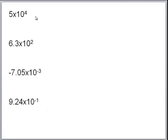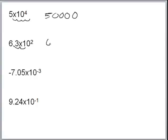Now let's practice taking numbers out of scientific notation. For 5 times 10 to the positive fourth, we move the decimal 4 places to the right — that gives us 50,000. For the next example with a positive exponent of 2, we move the decimal two places to the right, giving us 630.